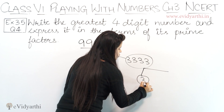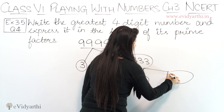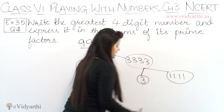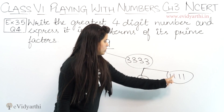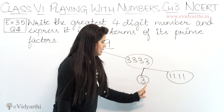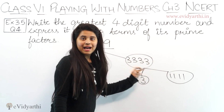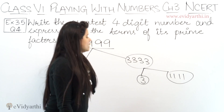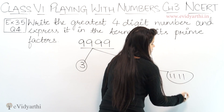This is 3. So 3 ones are 3, 3 ones are 3, 3 ones are 3, 3 ones are 3. Right? Then we are left with 11, 11.